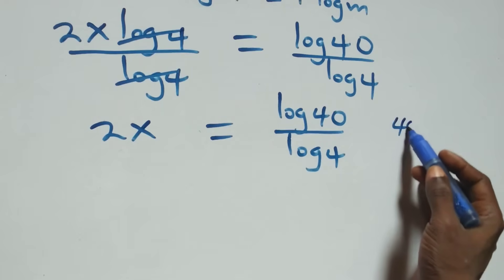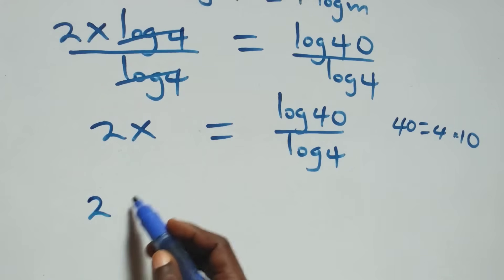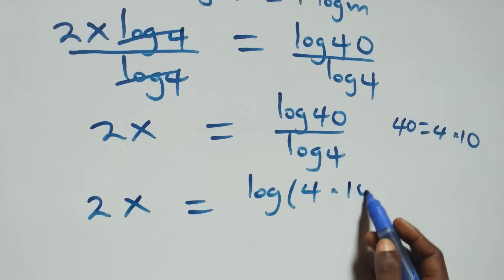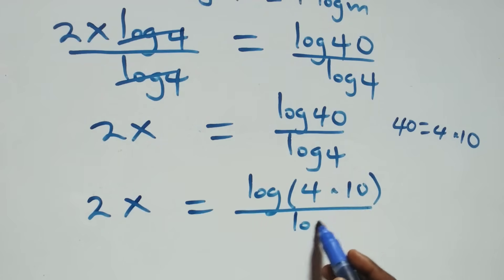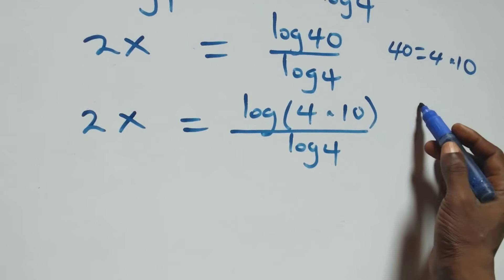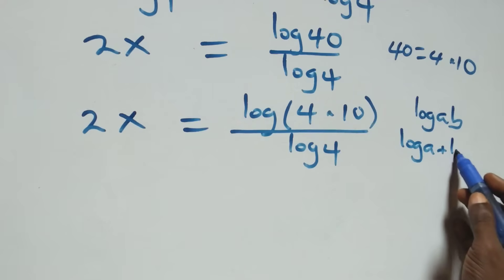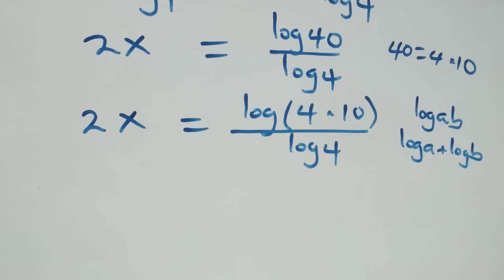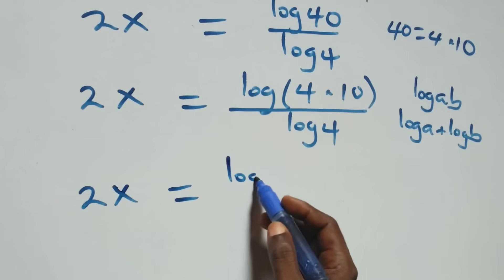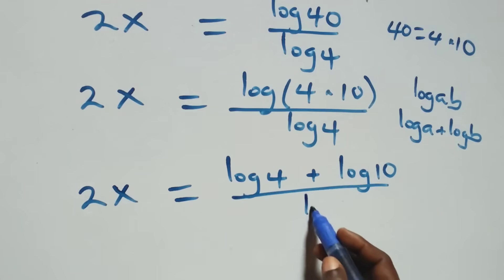The next step: we can write 40 as 4 times 10. Then what we have becomes 2x equals to log of 4 times 10 over log 4. We can express this using the log product rule: when we have log a times b, this can be written as log a plus log b. So all we have here becomes 2x equals to log 4 plus log 10 over log 4.